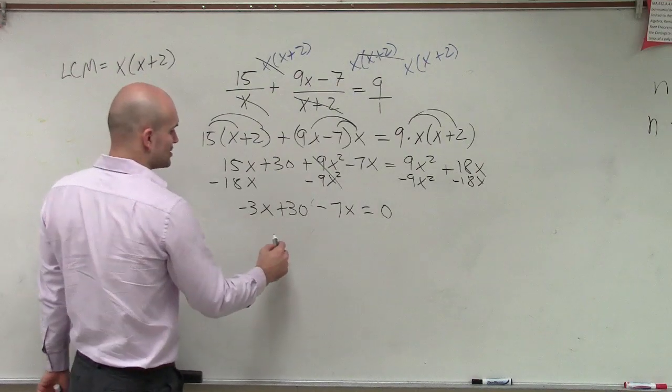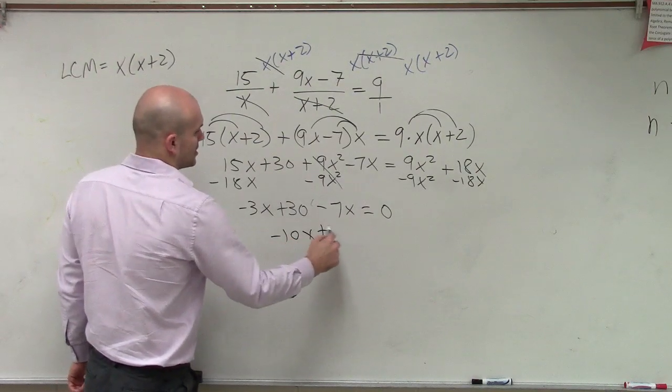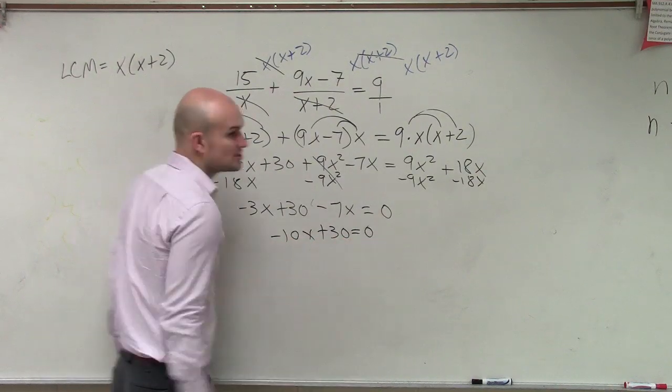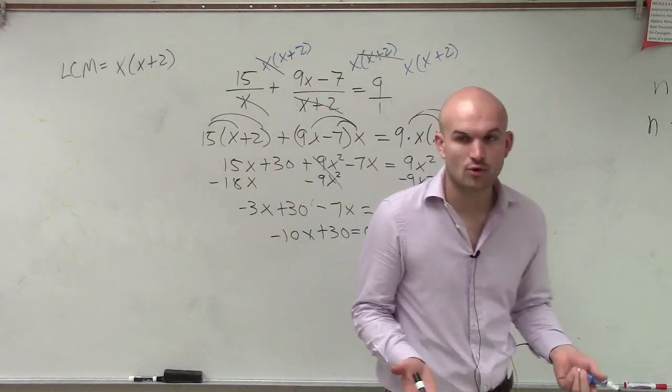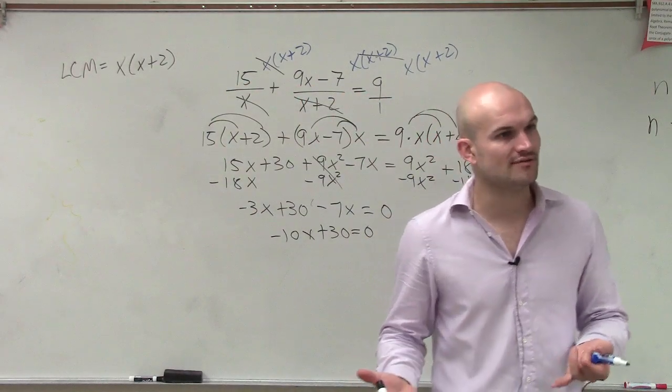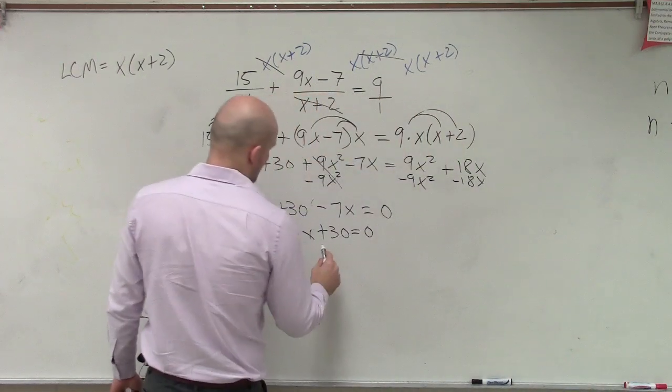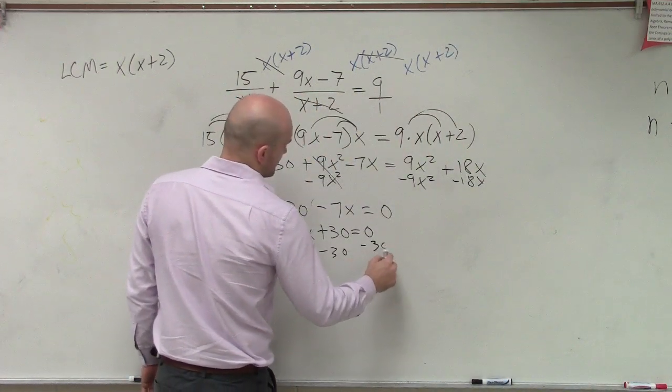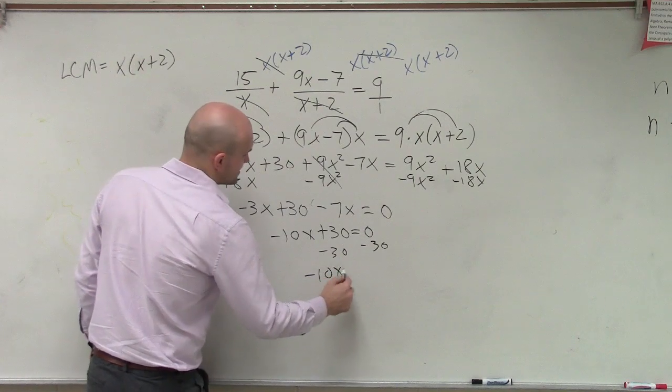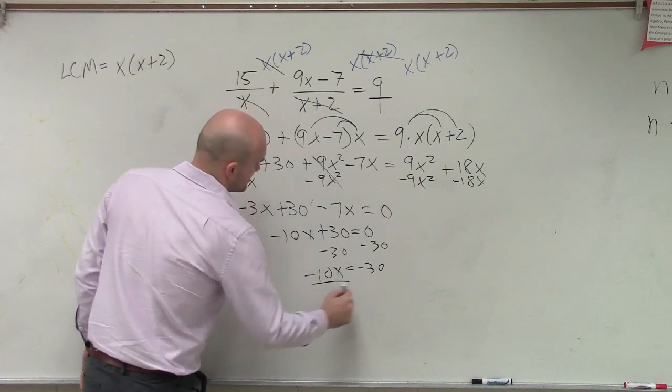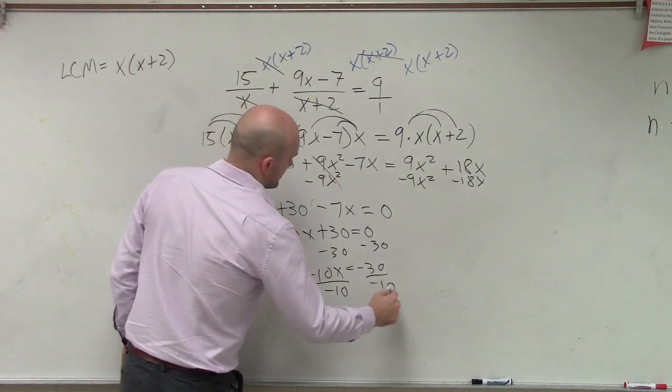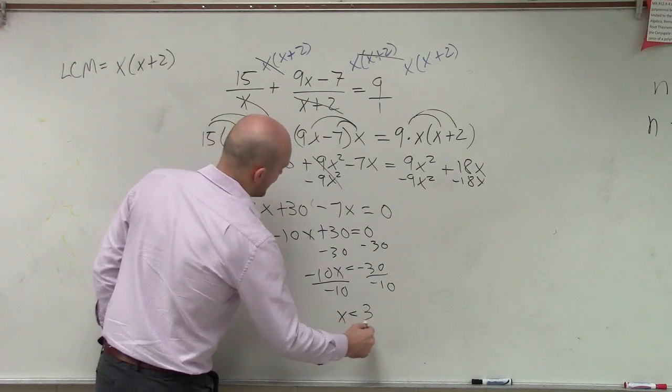So I combine my like terms, which is a negative 10x plus 30 equals 0. So unlike a quadratic where I'd have to factor and solve, now I can just isolate my variable. So I subtract 30 on both sides, and I get negative 10x equals a negative 30, divide by negative 10, and I get x equals a positive 3.